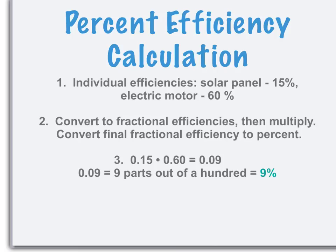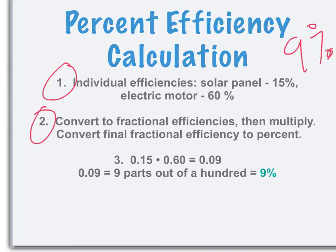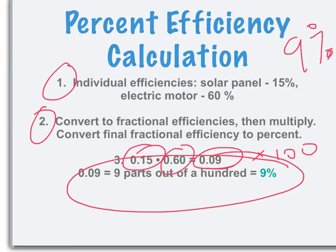Out of 100 joules entering the system, 9 joules were converted into useful energy, giving us an efficiency of approximately 9%. For a system with 3, 4, or even 5 steps, you calculate efficiency by taking the individual efficiencies, converting them to fractions — for instance, 60% becomes 0.60 — then multiplying those fractional efficiencies together and multiplying by 100 to get a percent. In this two-step case, we get a final efficiency of 9%.